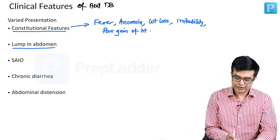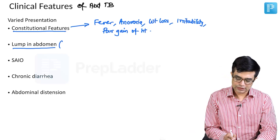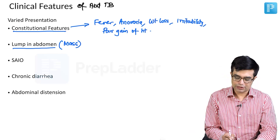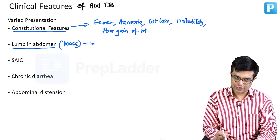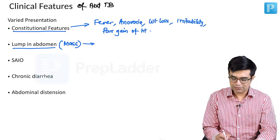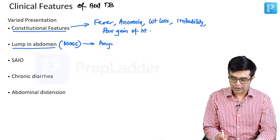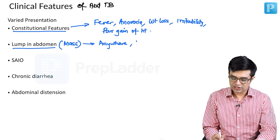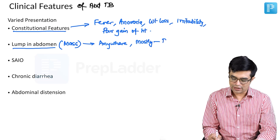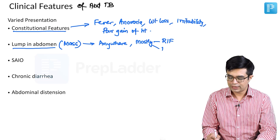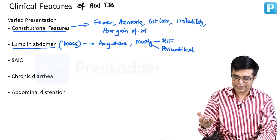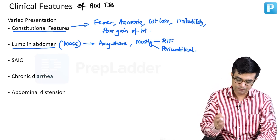Along with that, you can find that there is a mass or lump in the abdomen. The mass can be palpated anywhere in the abdomen, but mostly it is found either in the right iliac fossa or in the peri-umbilical region. These are the two common sites where the mass can be seen, although it can be palpated anywhere in the abdomen.